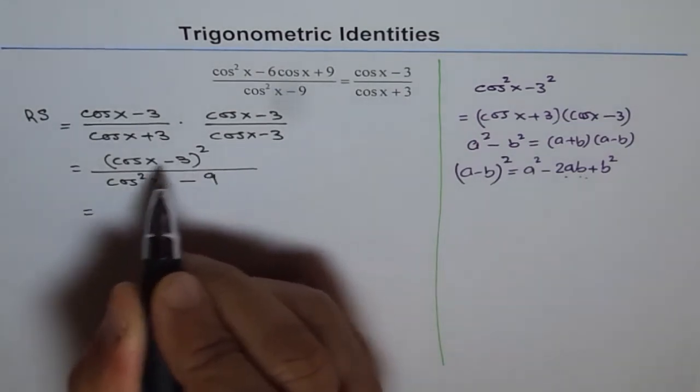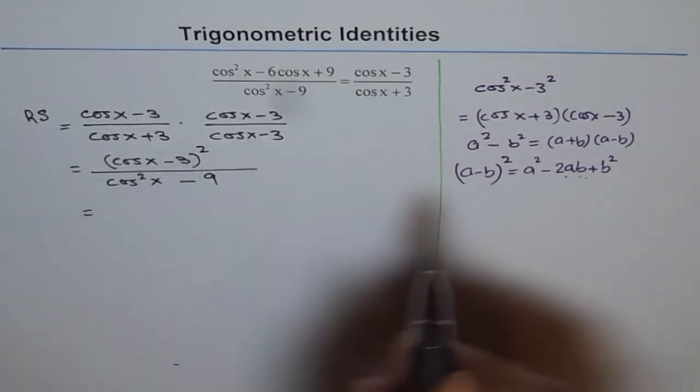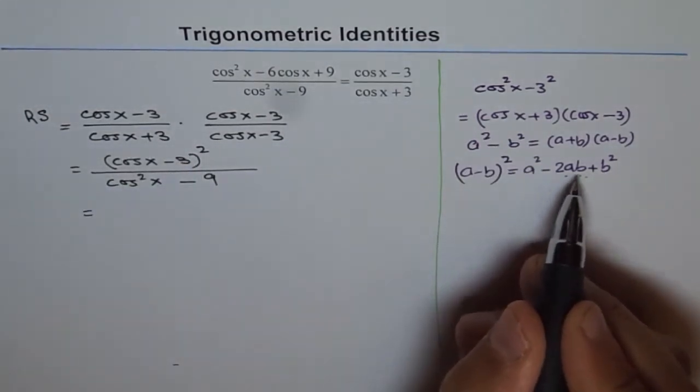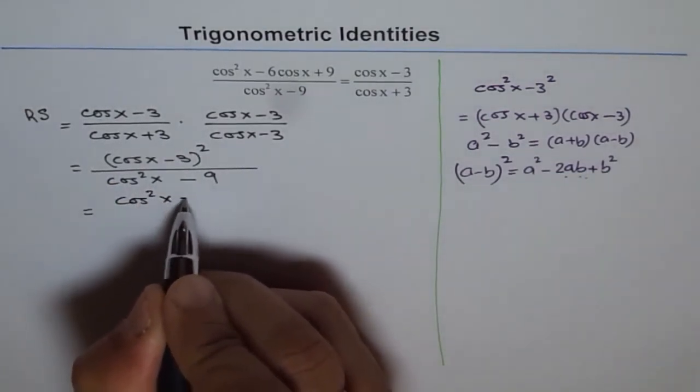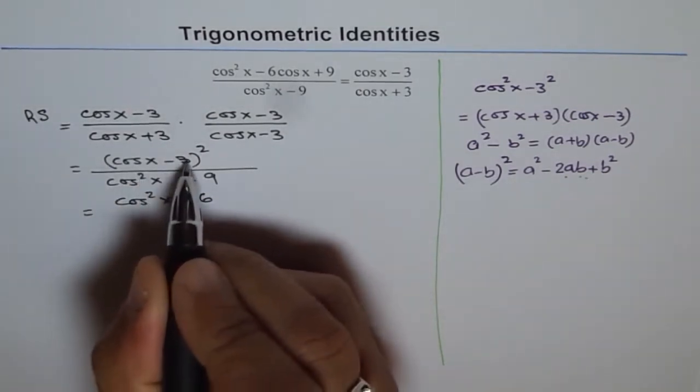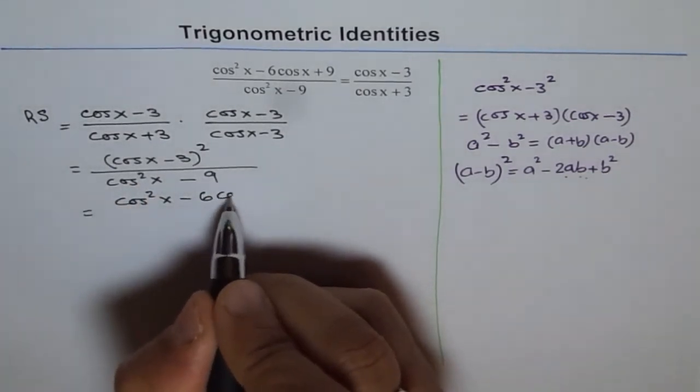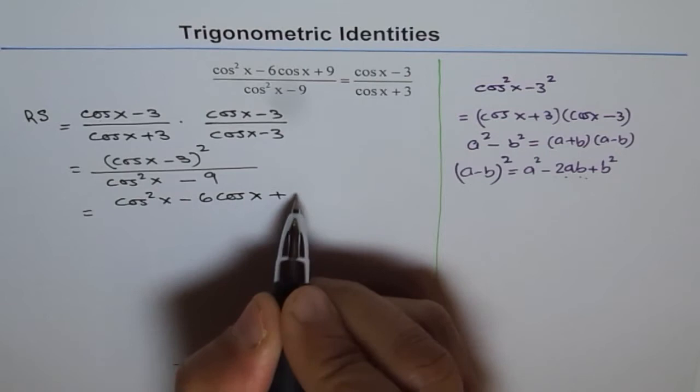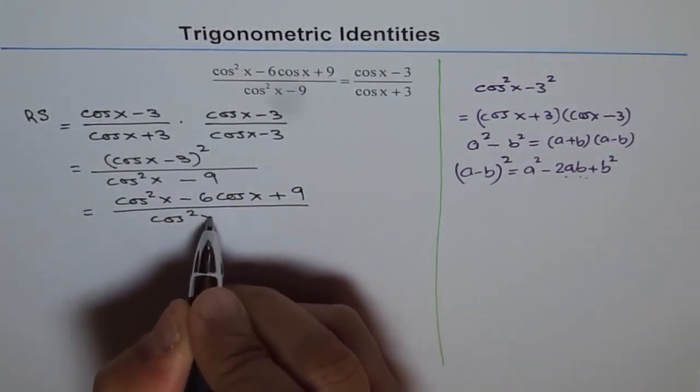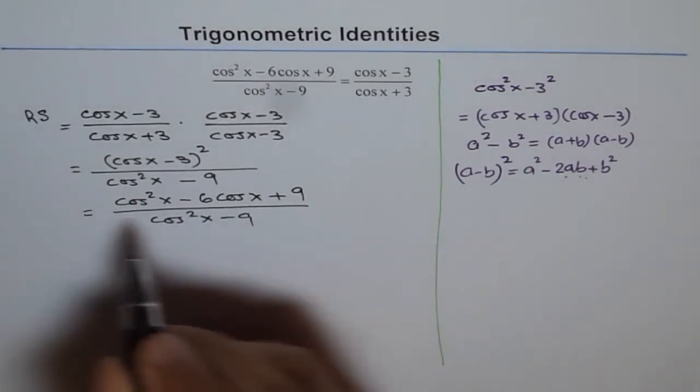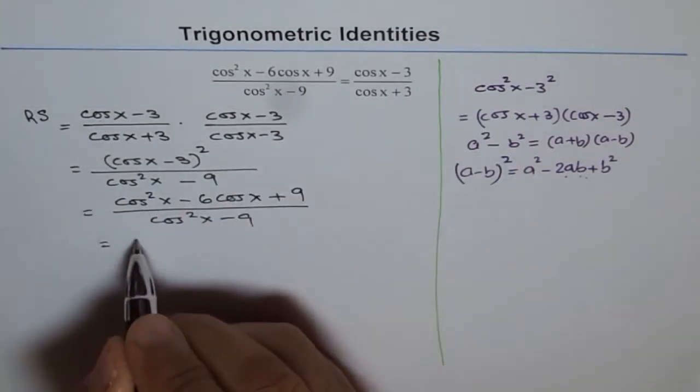Now I can expand the numerator. a minus b whole square is a square minus 2ab plus b square. So a is cos. We can write this as cos square x minus 6 cos x. 2 times 3 is 6. Cos x plus 9, which is 3 square, divided by cos square x minus 9 and that is my left side.